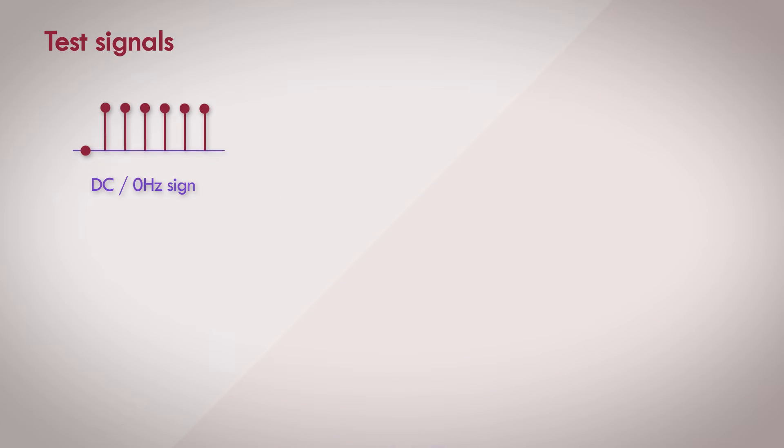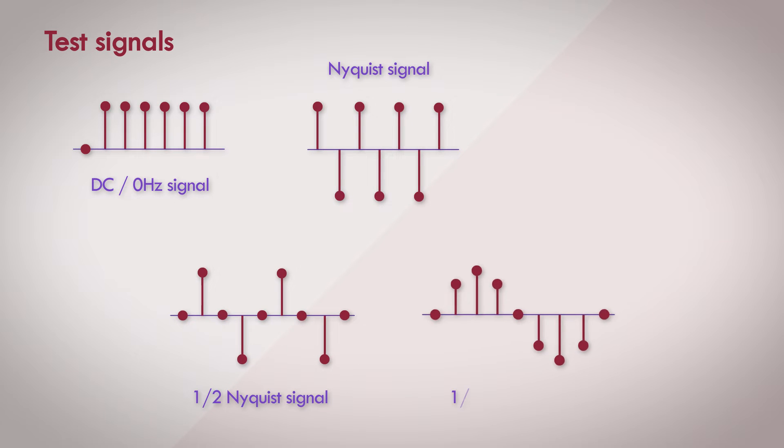So we have 5 test signals to go through. These are the DC signal or the 0Hz signal, the Nyquist signal, the half Nyquist and quarter Nyquist signals, and impulse signal.